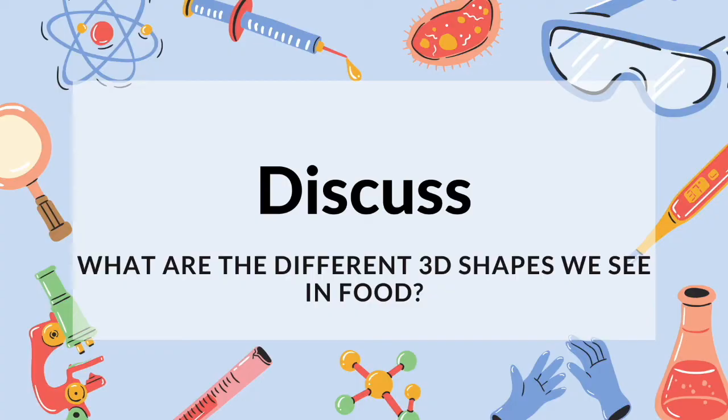In addition, at Epcot in Disney World, there's a structure in the shape of a sphere. The second discussion question is: what are the different 3D shapes we see in food? Spheres can be found in various fruits such as oranges and grapefruits. Blocks of cheese and ice cream sandwiches are examples of rectangular prisms. Corn on the cob and Pringle containers are in the shape of a cylinder.